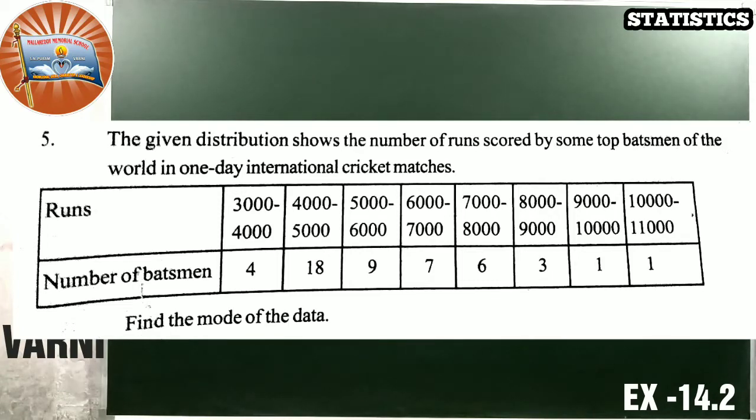So given runs and number of batsmen here, look at the data. 3000 to 4000, 4 batsmen. 4000 to 5000, 18 batsmen. 5000 to 6000, 9 batsmen. 6000 to 7000, 7 batsmen. 7000 to 8000, 6 batsmen. 8000 to 9000, 3 batsmen. 9000 to 10000, 1 batsman. 10000 to 11000, 1 batsman.